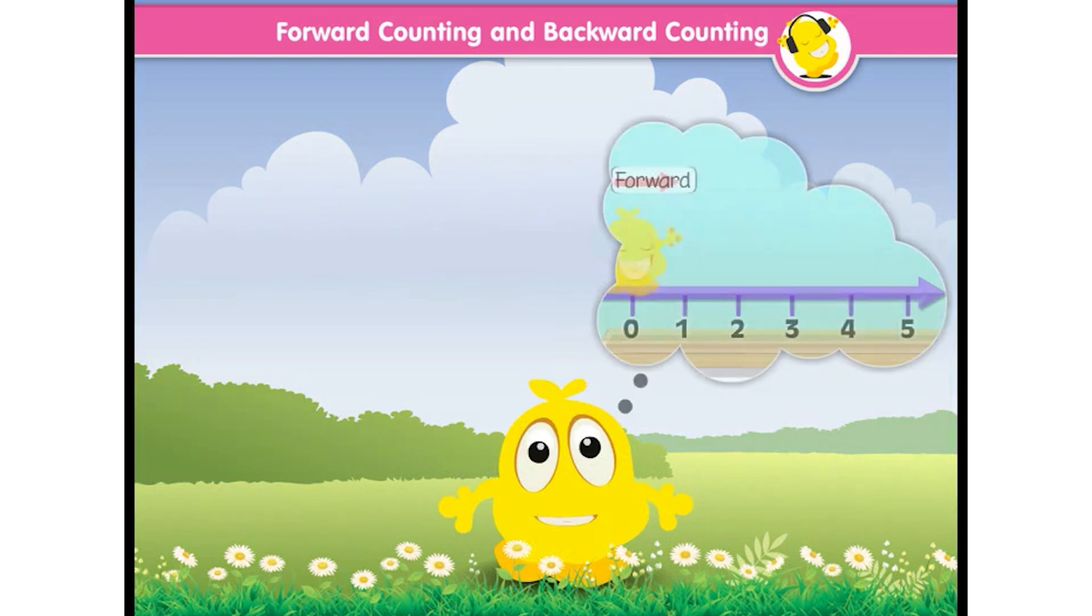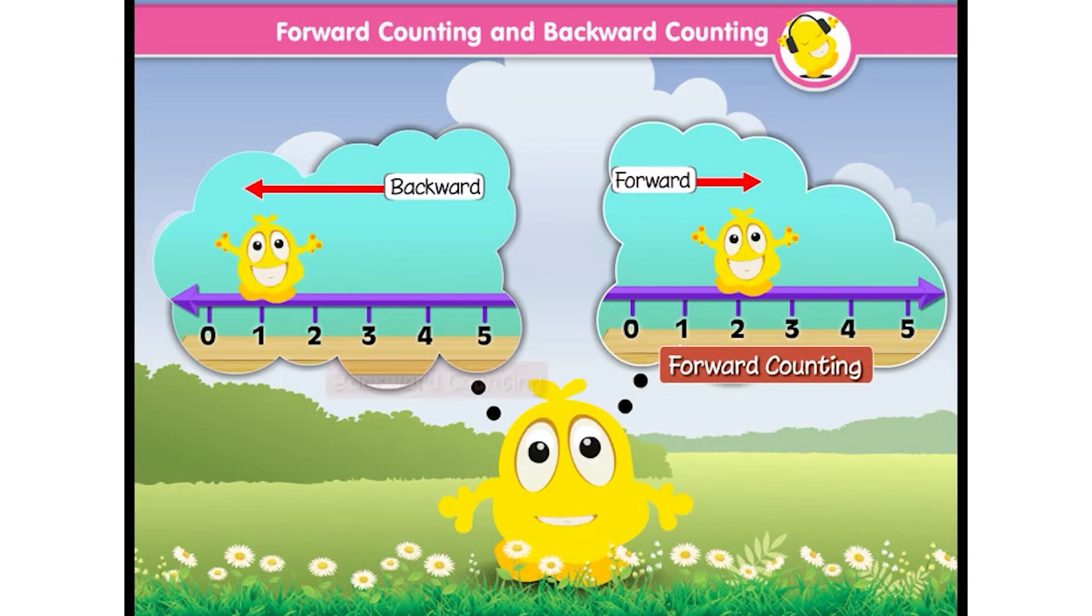So jumping backward on a number line is backward counting. Jumping to right on a number line is forward counting, and jumping to left on a number line is backward counting.